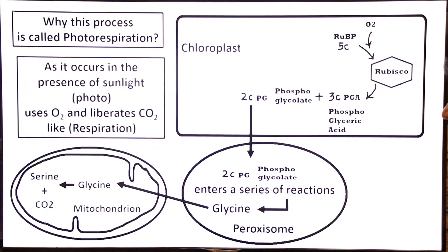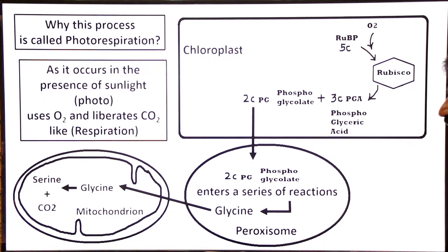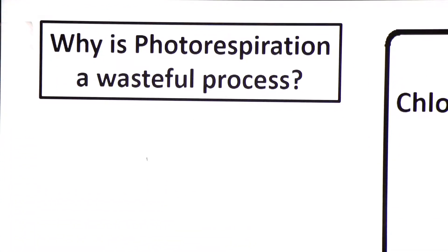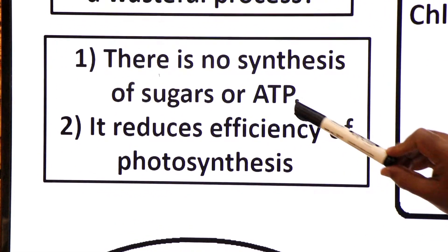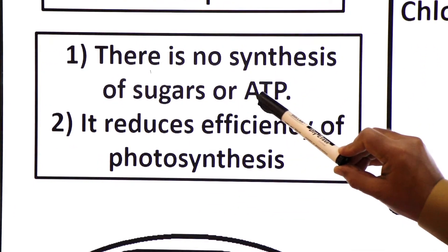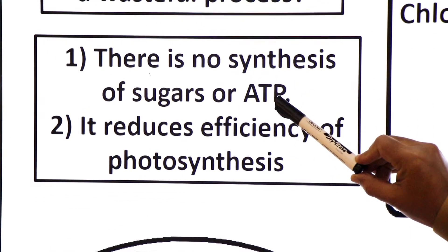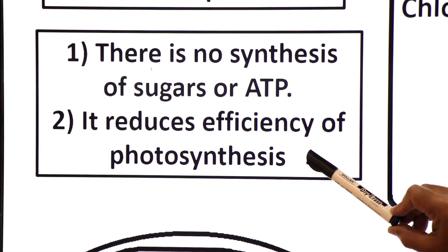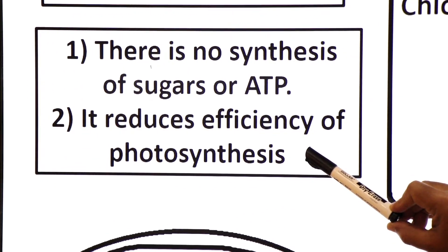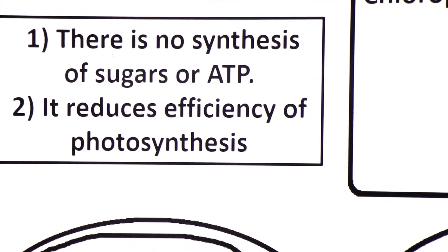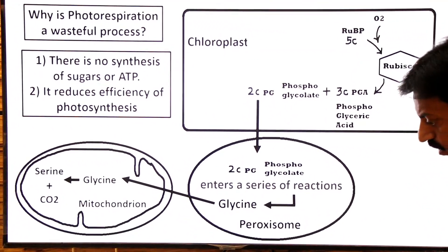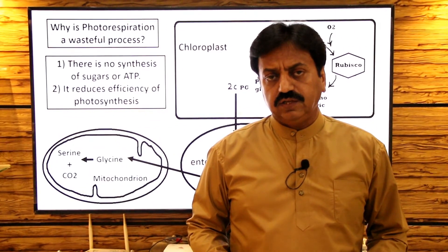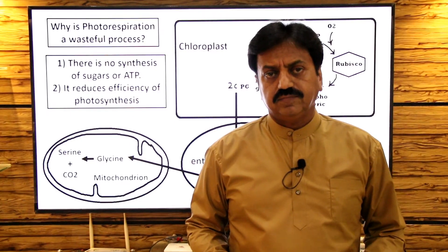Why is photorespiration a wasteful process? First, there is no synthesis of sugar or ATP — photorespiration generates neither ATP nor sugar. Second, it reduces the efficiency of photosynthesis. These are the two reasons it is considered a wasteful process. Thank you dear students, wishing you all the best.